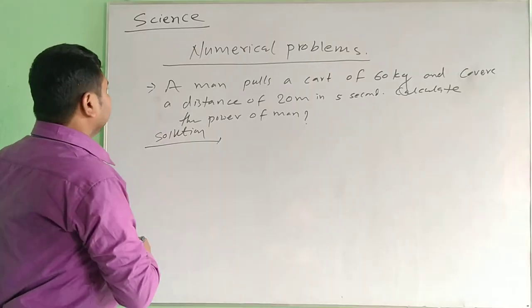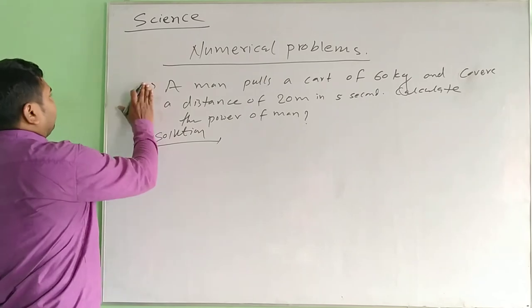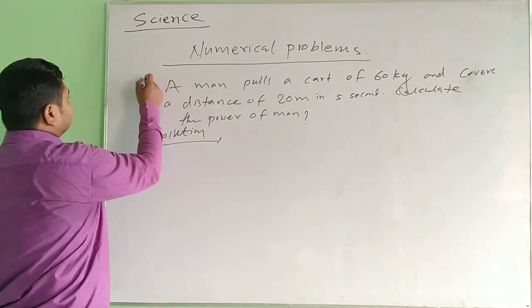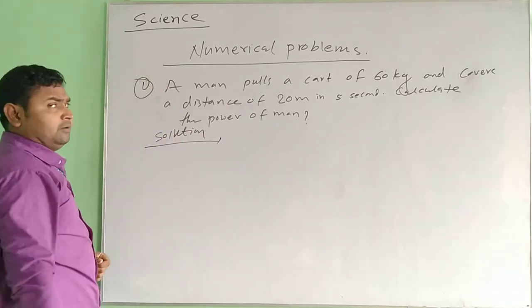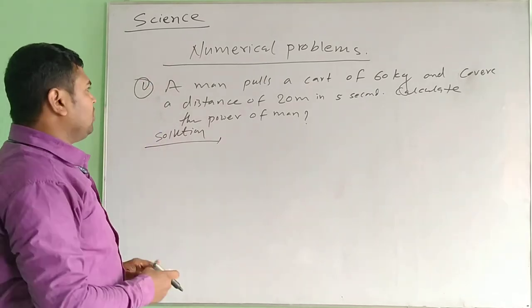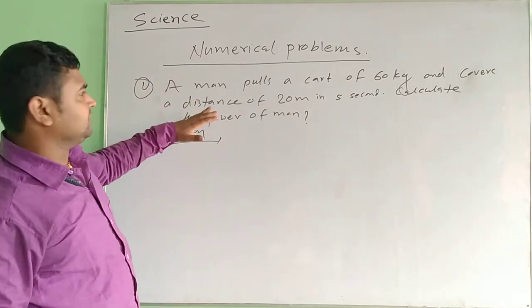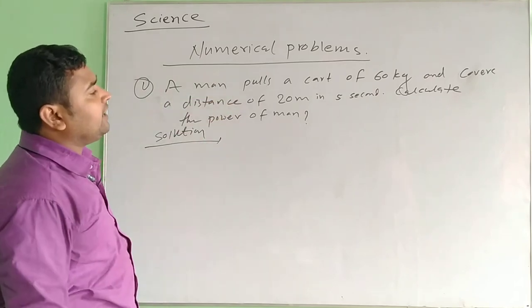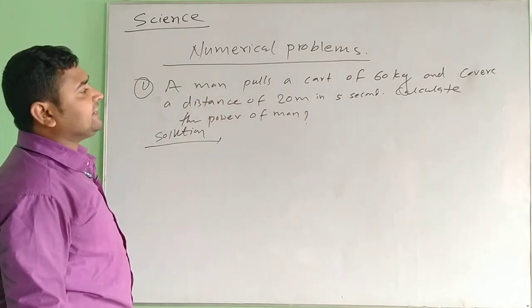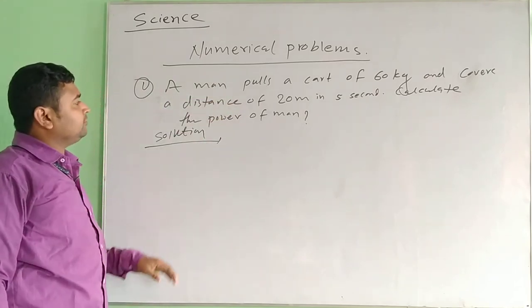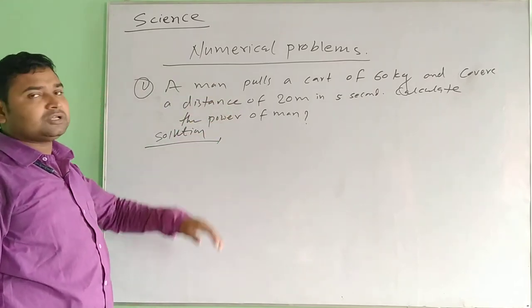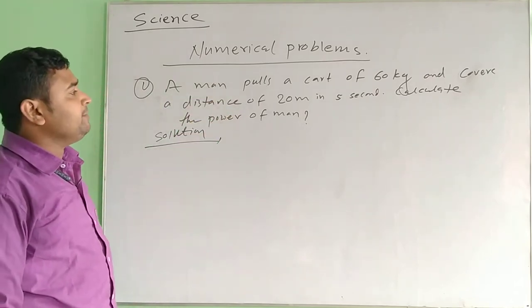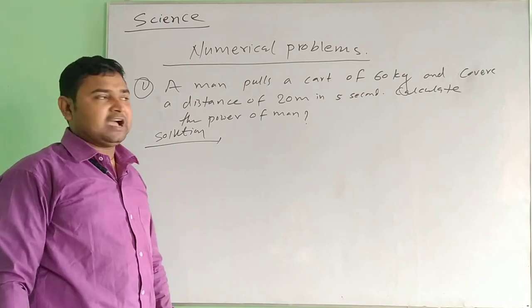Now let's do some numerical questions. Here is a man of 60 kg who covers a distance of 20 metres in 5 seconds.